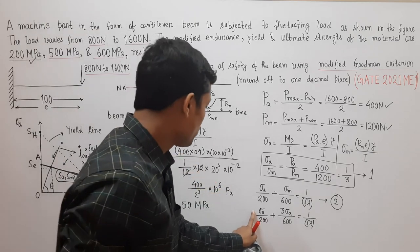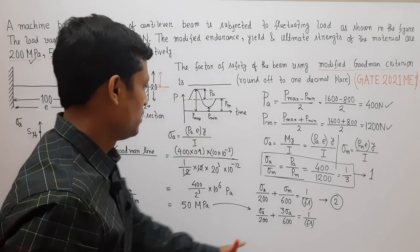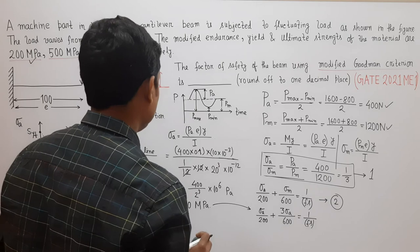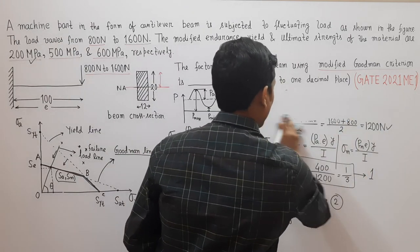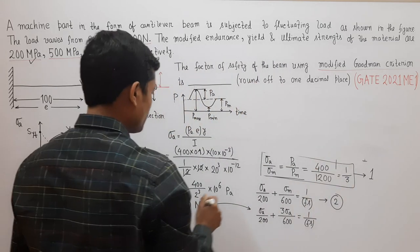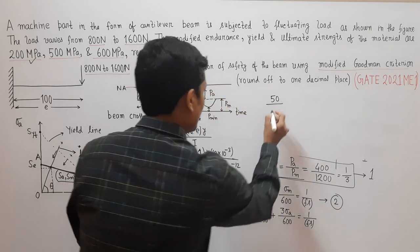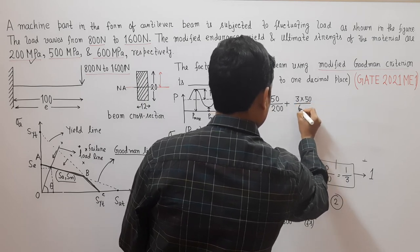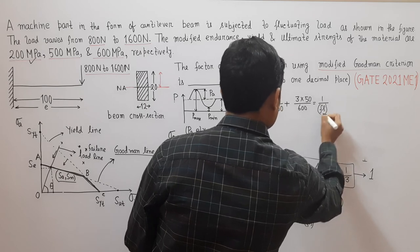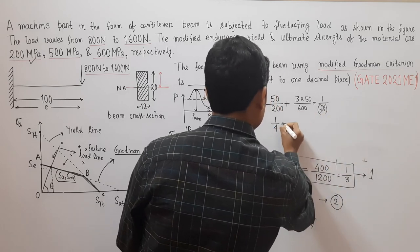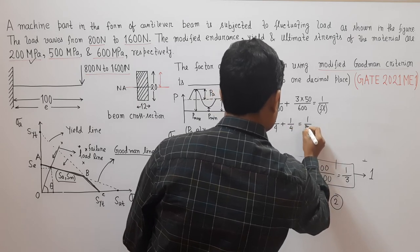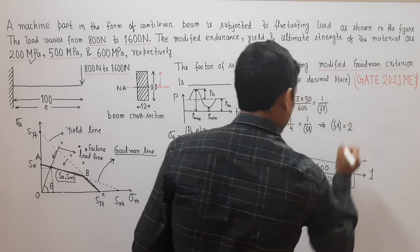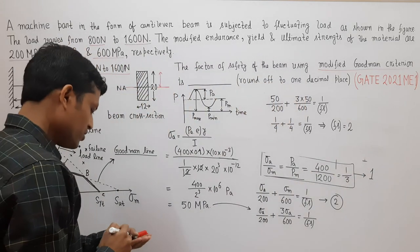Substituting sigma_A = 50 MPa into Equation 2: 50/200 + (3 × 50)/600 = 1/F_S, which gives 1/4 + 1/4 = 1/F_S, so 1/2 = 1/F_S. Therefore, the factor of safety is 2. The answer to this problem is 2.